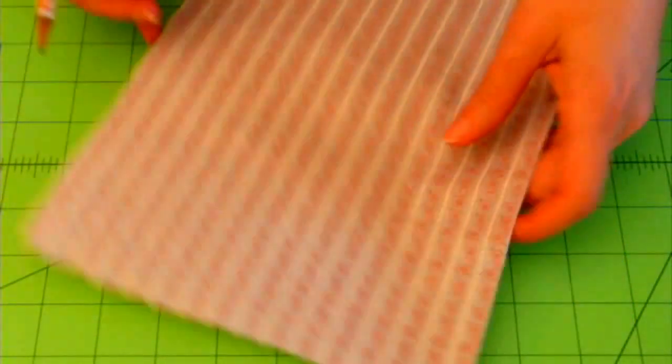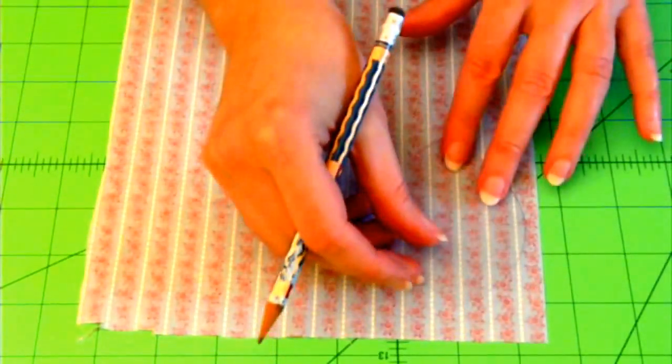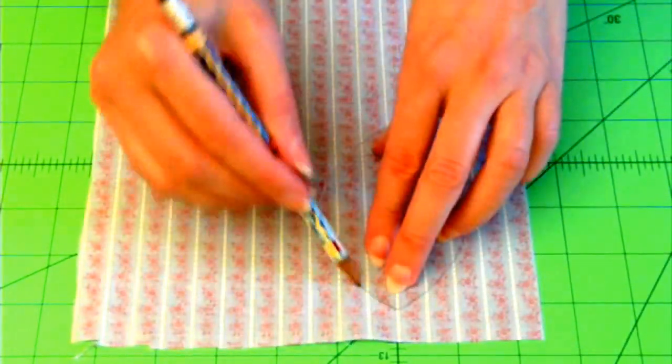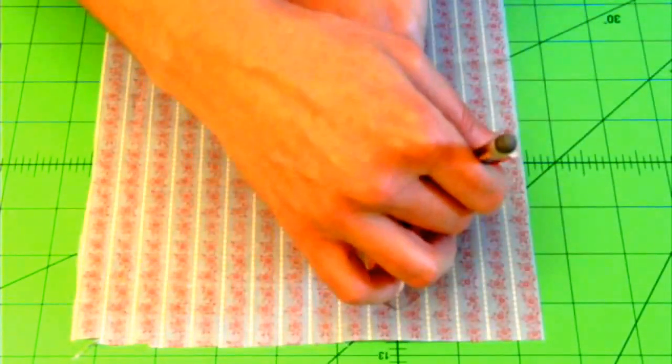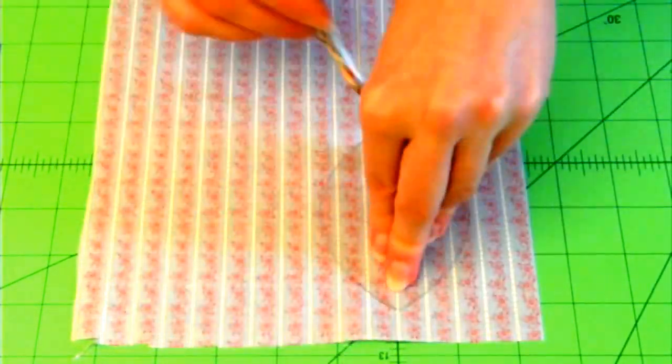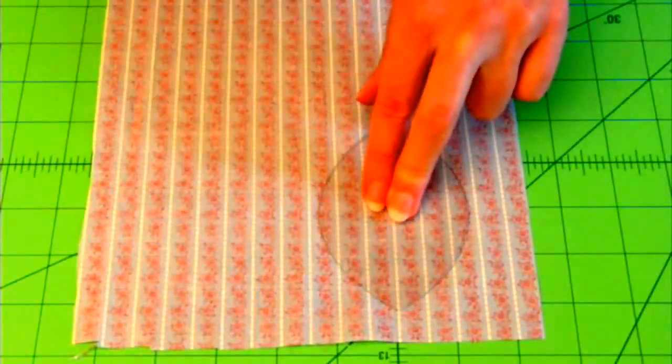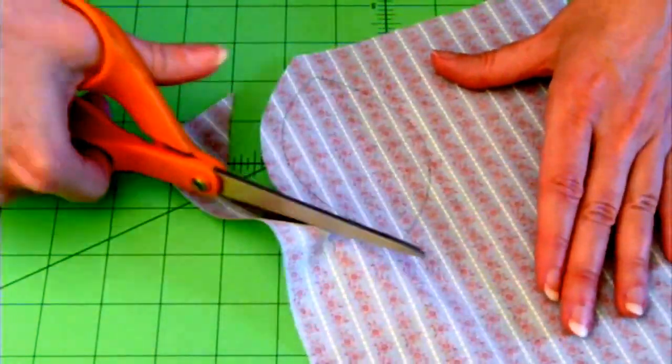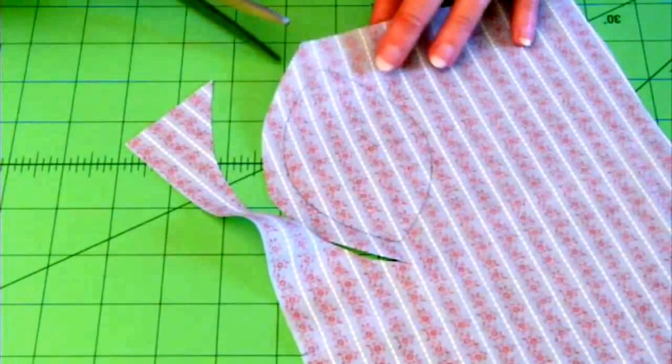Now your first step will be to take your fabric and trace one of your clamshell template pieces on the back of it with either a pencil or a water soluble marker. The main thing to know is to leave enough room around your trace line so that you can add about a half inch of seam allowance.